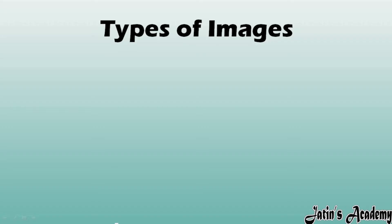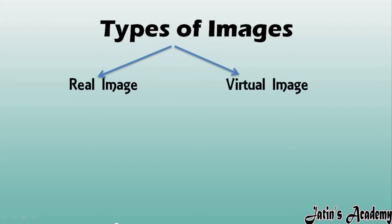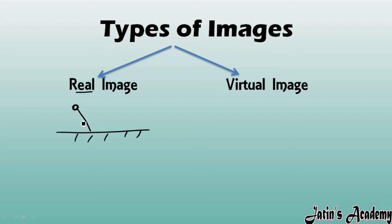Next we are having types of images. There are two kinds of images: first, real image, and second, virtual image. As the name suggests, real images are those in which reflected light rays actually meet in the real world. Whenever we have a mirror and an object, after striking the light rays on a plane mirror and after getting reflected back, if these light rays actually meet at one point in the real world, then we have a real image.